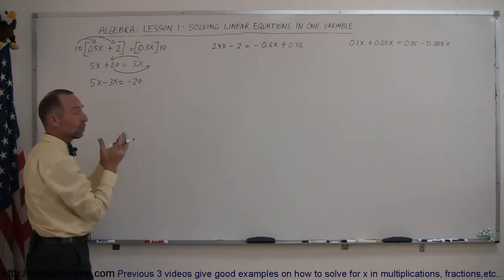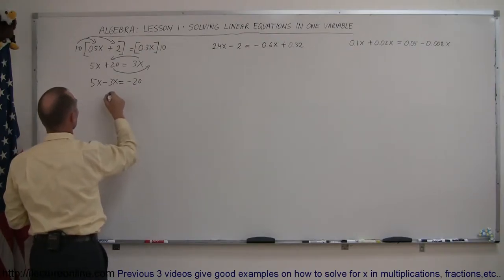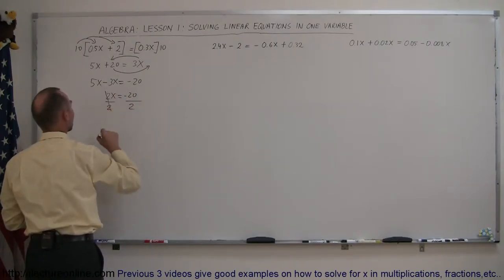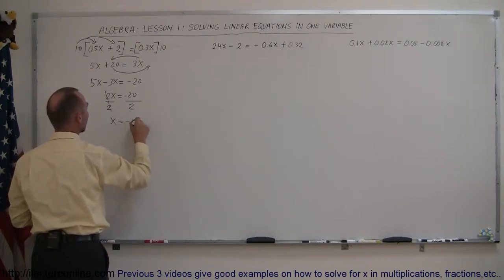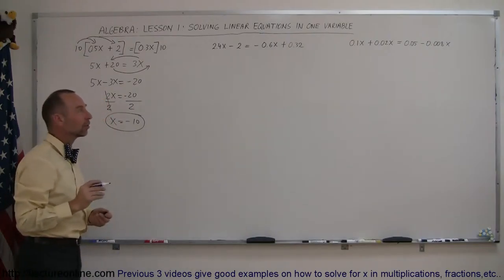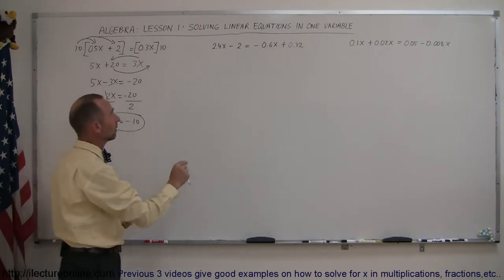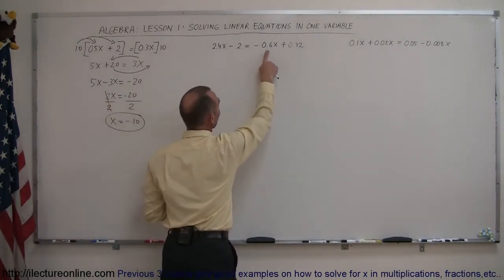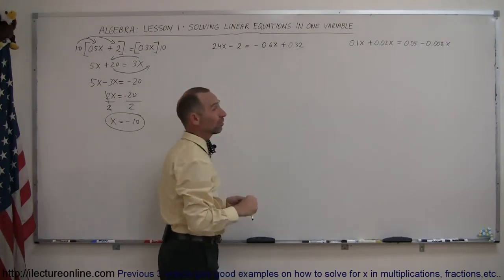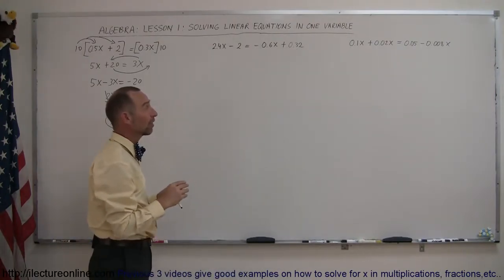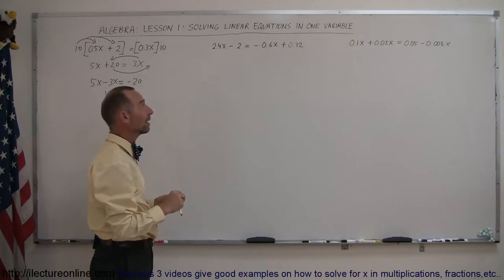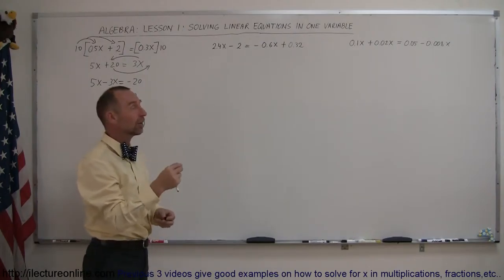Now you follow the normal procedures, move all the terms that have an x to the left side, all the terms with the numbers to the right side, which means we end up at 5x minus 3x. Remember, when you cross the equal sign, the sign changes. So the plus 20 becomes minus 20 on the right side. 5x minus 3x, we now combine the like terms. So this is 2x equals minus 20. Divide both sides by the numerical coefficient from the x. That disappears, and x equals minus 20 divided by 2 is minus 10.